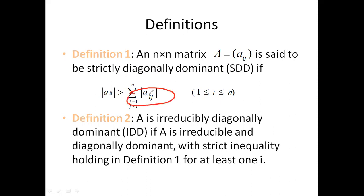A matrix A is irreducibly diagonally dominant (IDD) if A is irreducible and diagonally dominant with strict inequality holding in Definition 1 for at least one i. This means the condition should be valid with greater than or equal to.